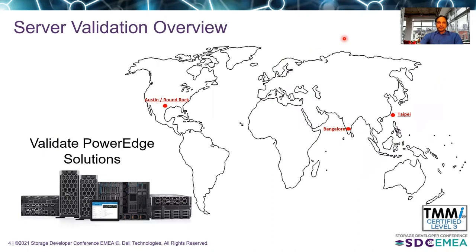The server validation group is located in three different regions: Austin, Bangalore, and Taipei. We do end-to-end server validation, and functional and non-functional testing will be performed by all these teams before a product leads to the market.